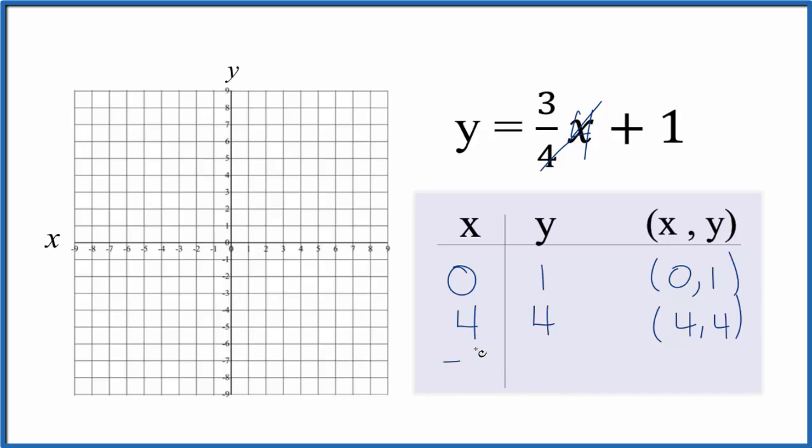Let's try negative four as well. So if we put negative four in for x, three-fourths times negative four, that gives us a negative three. So negative three plus one, that's negative two.